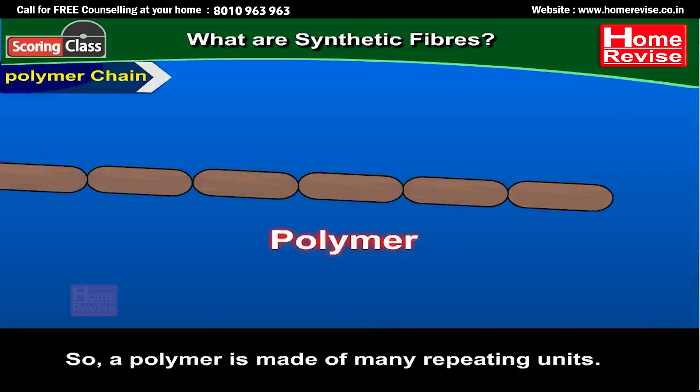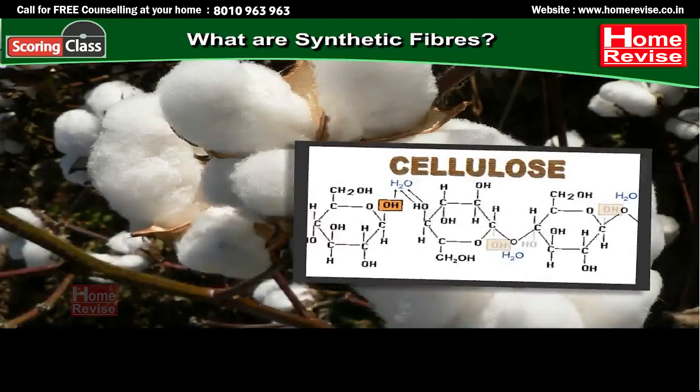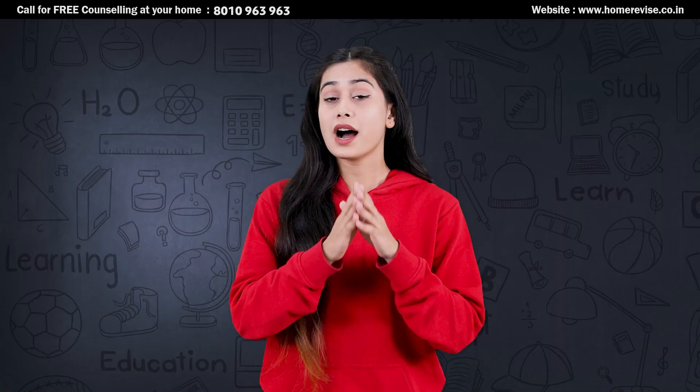Polymers occur in nature also. Cotton, for example, is a polymer called cellulose. Cellulose is made up of a large number of glucose units.